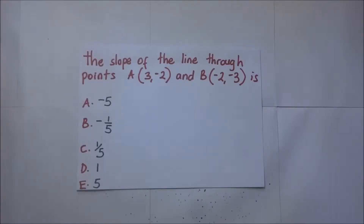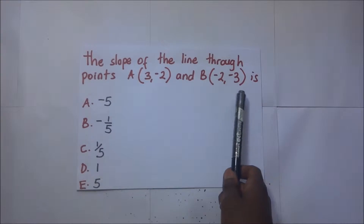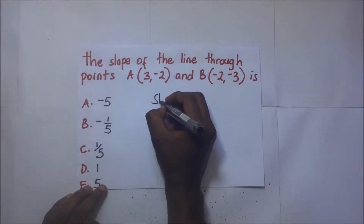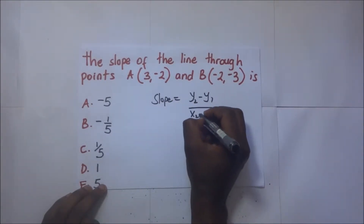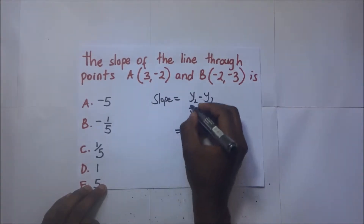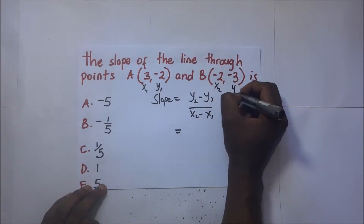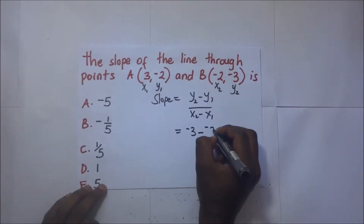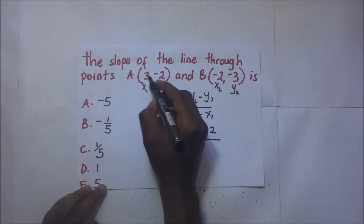The first question requires us to find the slope of the line through points A which is (3, -2) and B which is (-2, -3). The slope is given by y2 minus y1 over x2 minus x1. Calling the first point x1, y1 and the second x2, y2, that gives us y2 = -3, minus y1 = -2, divided by x2 = -2, minus x1 = 3.